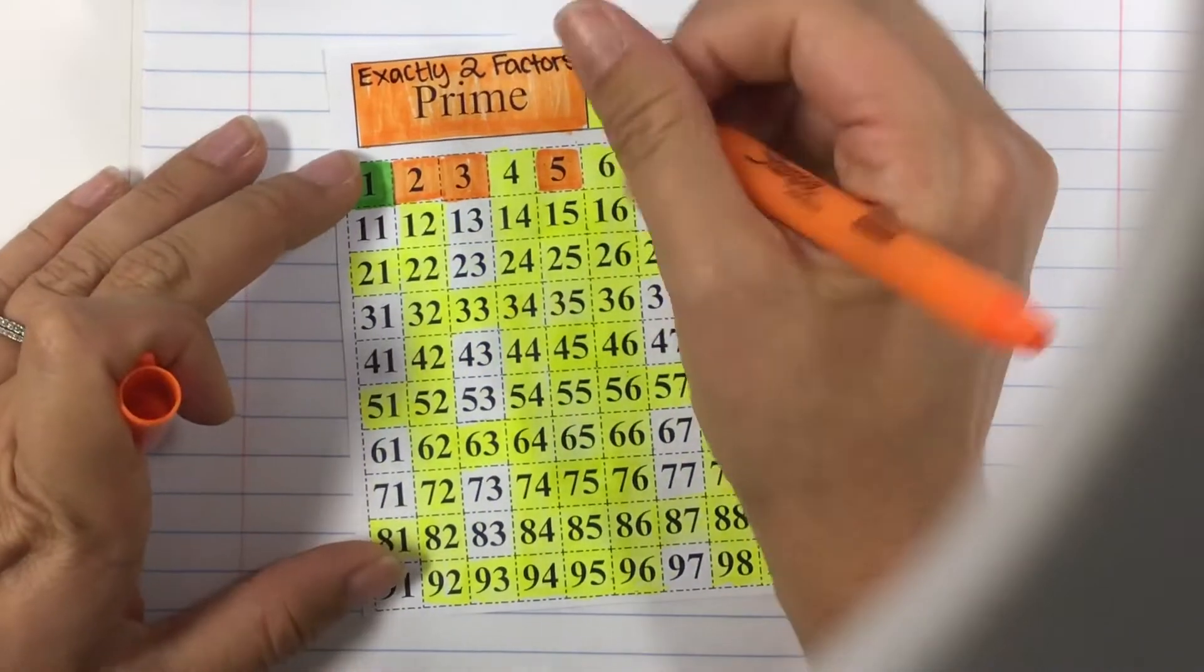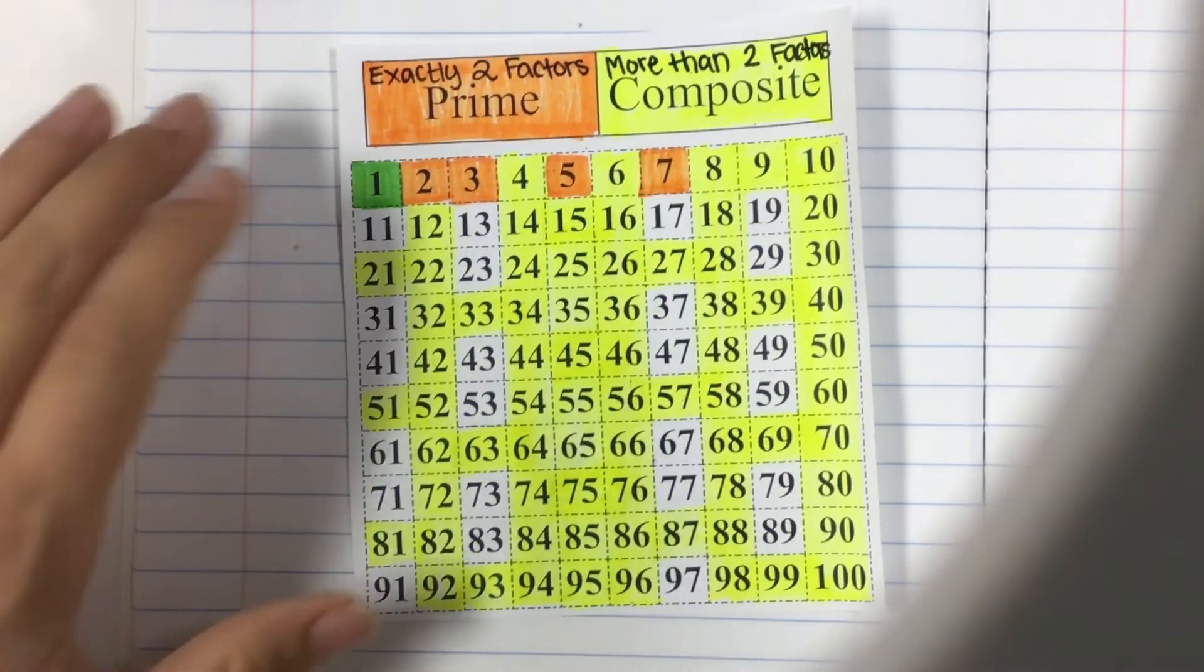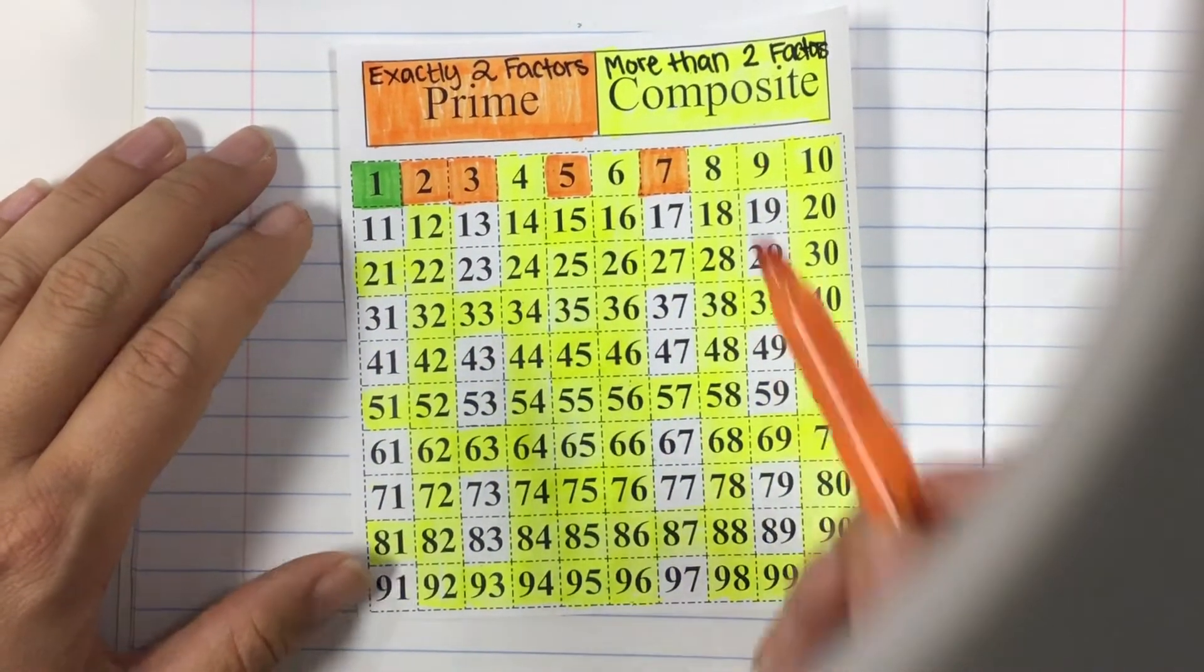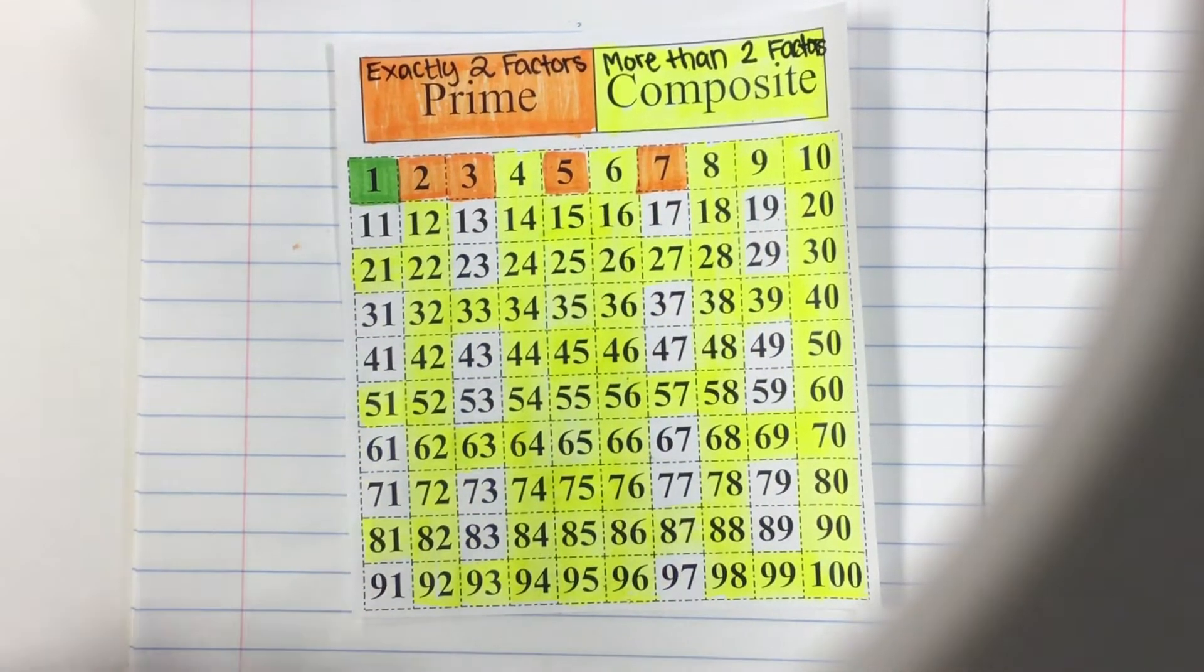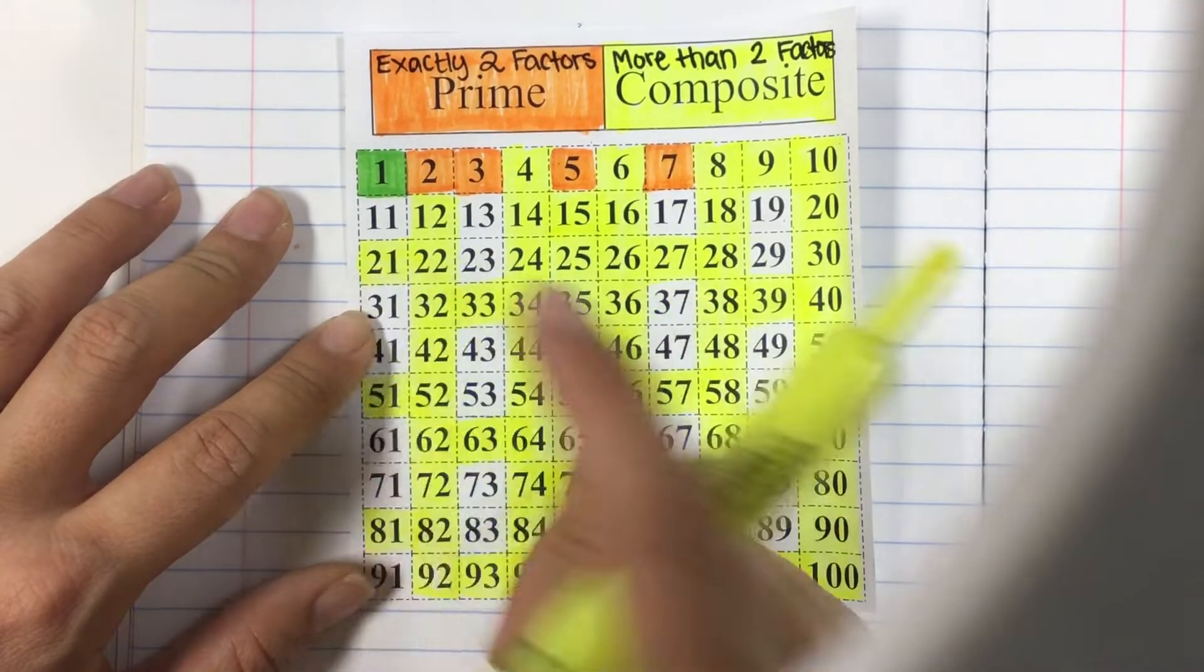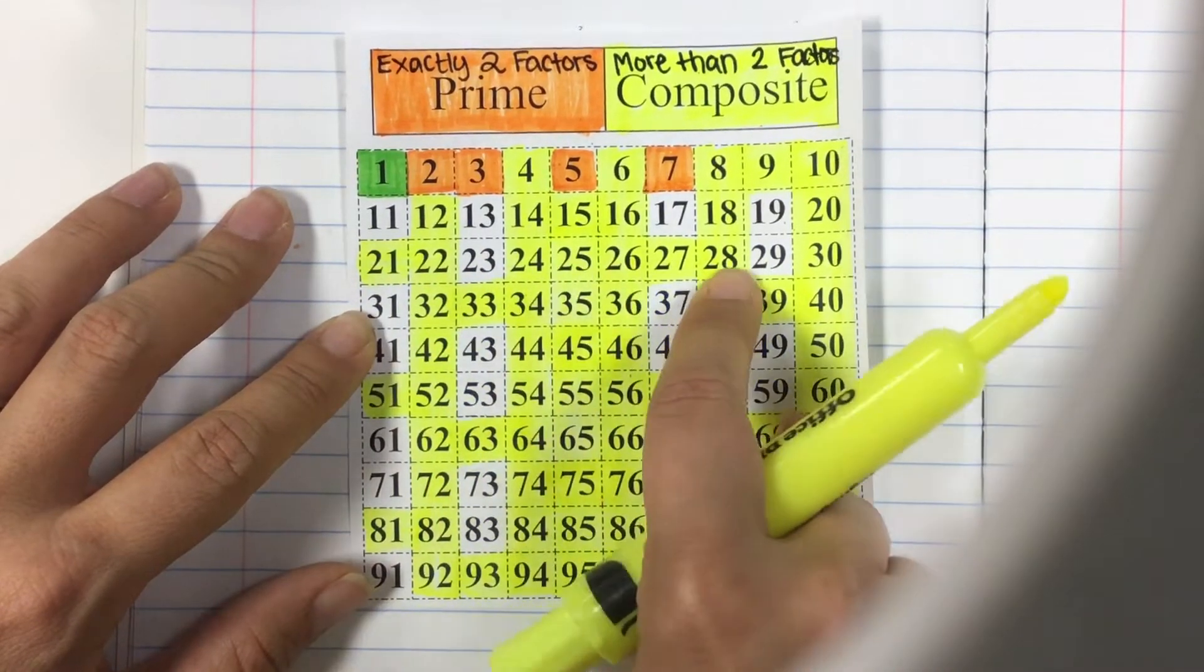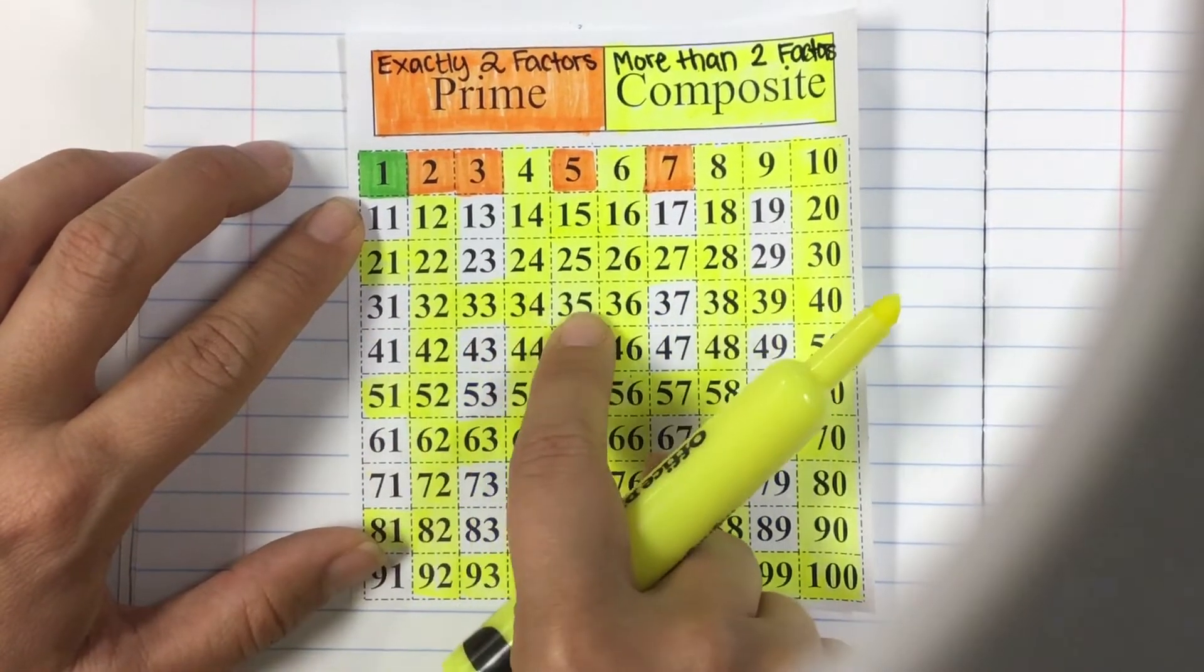Let's go to 7. That's our next prime number. And then here we're just going to count by 7s. Maybe you know all your multiples of 7s to 100. Maybe you don't. If you know the next one's 14 we already have that highlighted. Make sure you change markers. Then we know 21 is highlighted. Let's just count: 28, 35. Most of these are already highlighted.